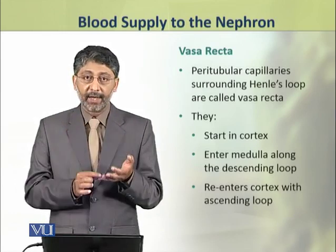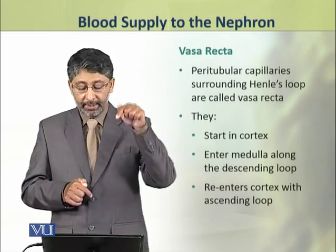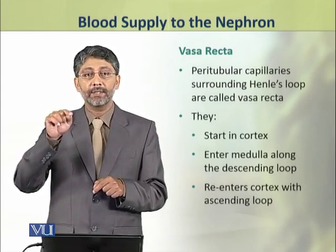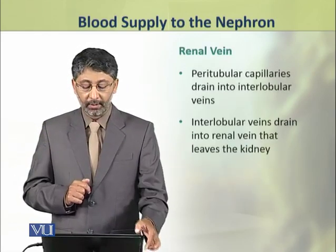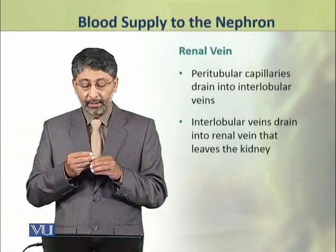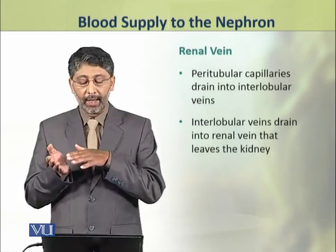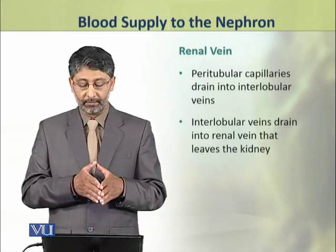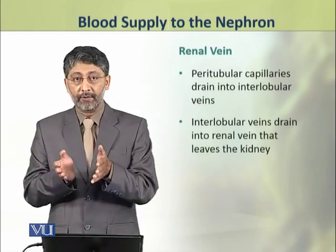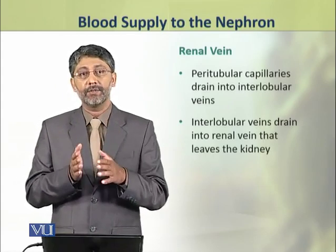The Vasa Recta start in the cortex, then enter the medulla along the descending loop of Henle, and re-enter the cortex with the ascending loop of Henle. These peritubular capillaries recombine and drain into an interlobular vein. Interlobular veins from different nephrons drain into a renal vein that leaves the kidney.